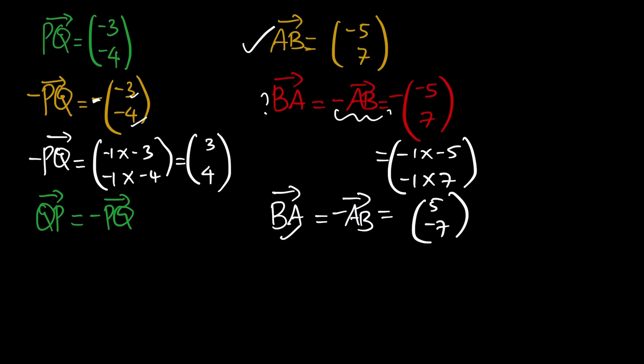Don't forget we have component form and standard form. In standard form, this would be written as negative 5i plus 7j. When you see something like that, we are basically saying the same thing.